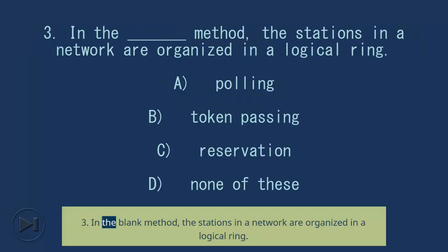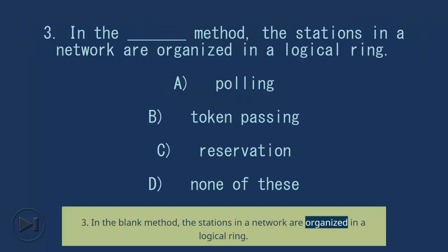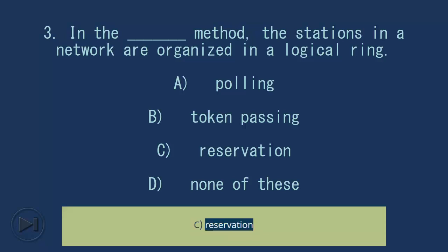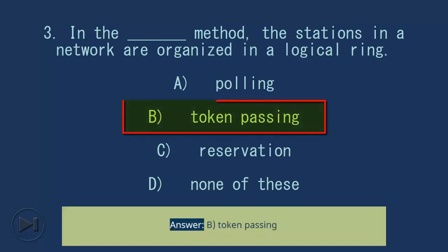Question 3: In the blank method, the stations in a network are organized in a logical ring. A) Polling, B) Token Passing, C) Reservation, D) None of these. Answer: B) Token Passing.